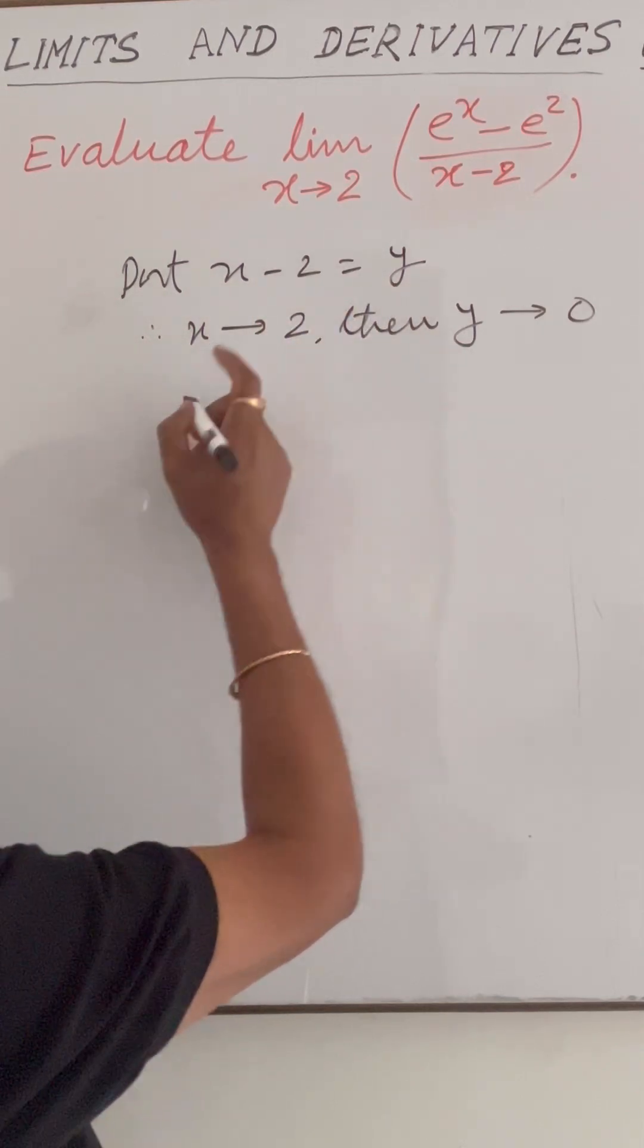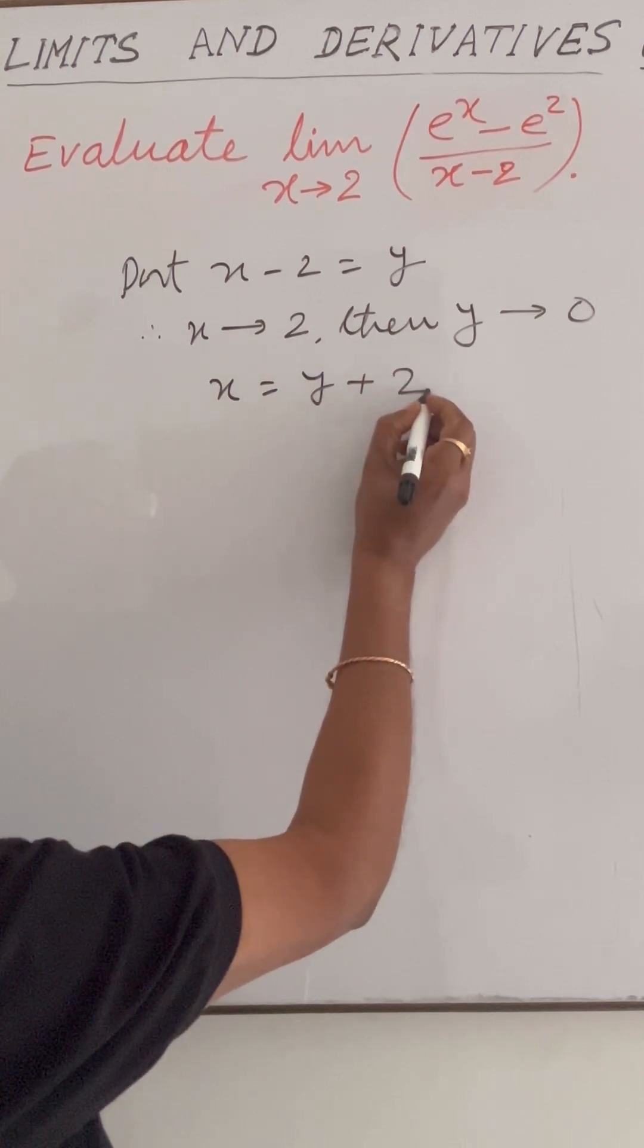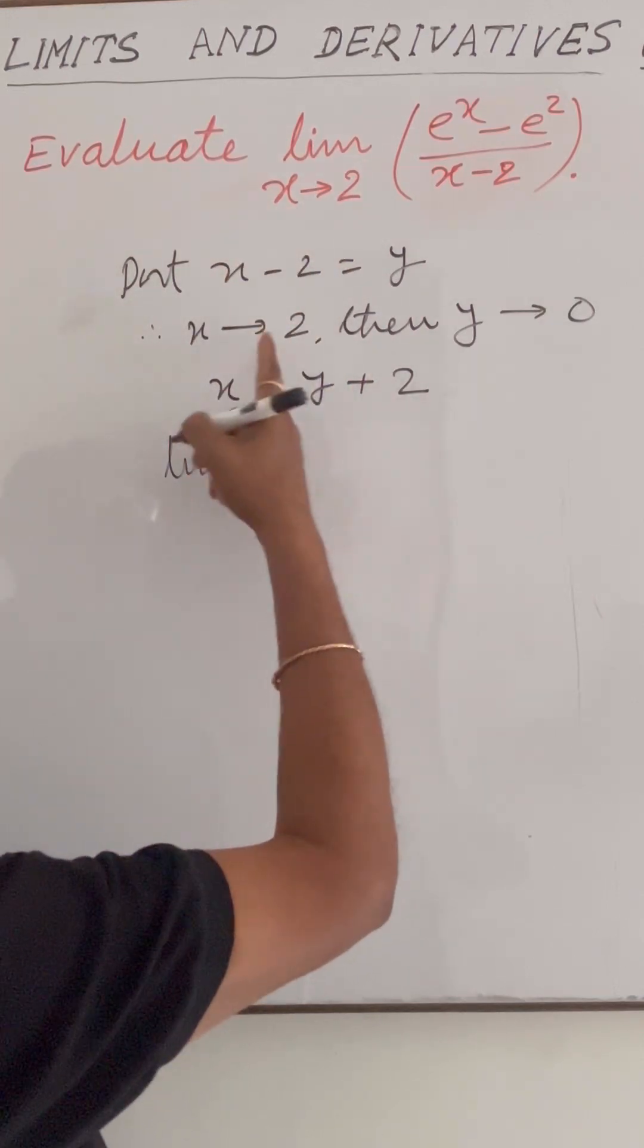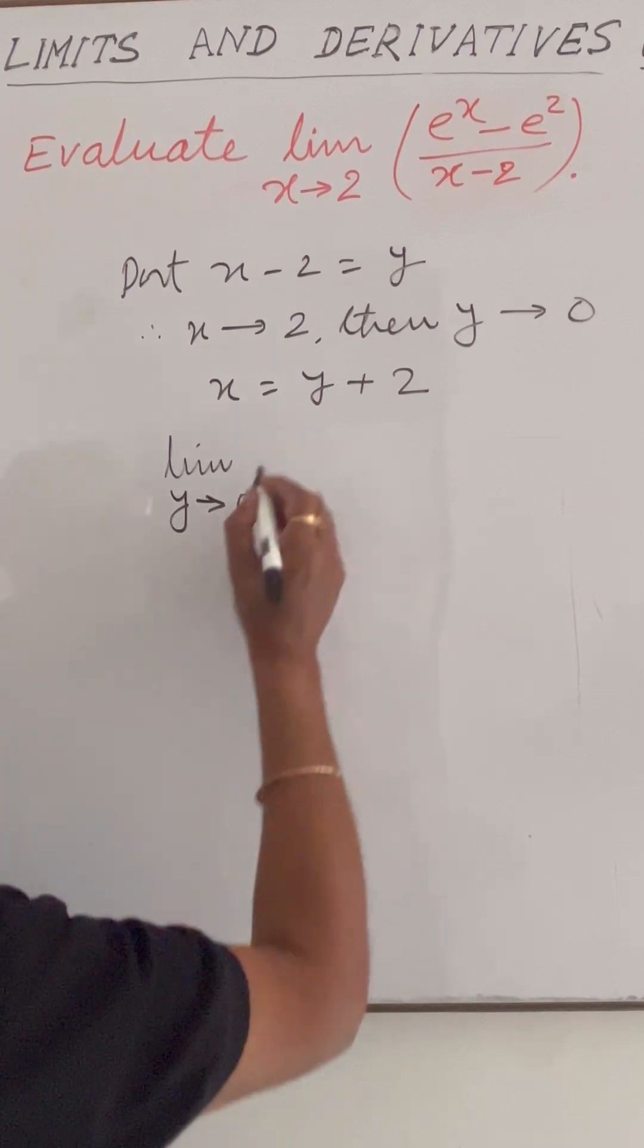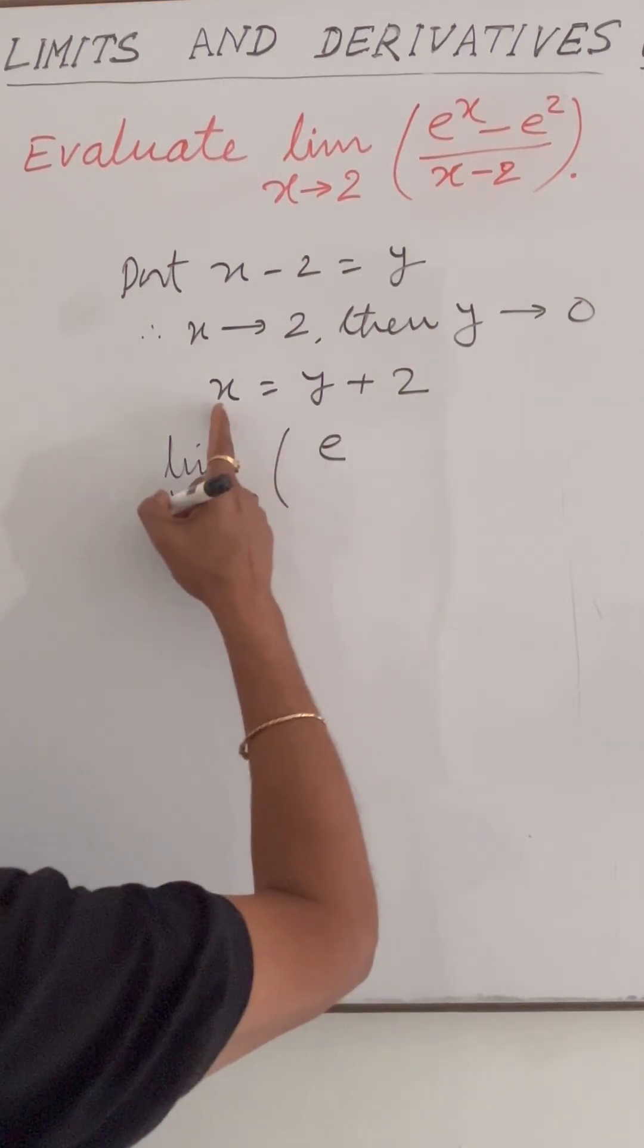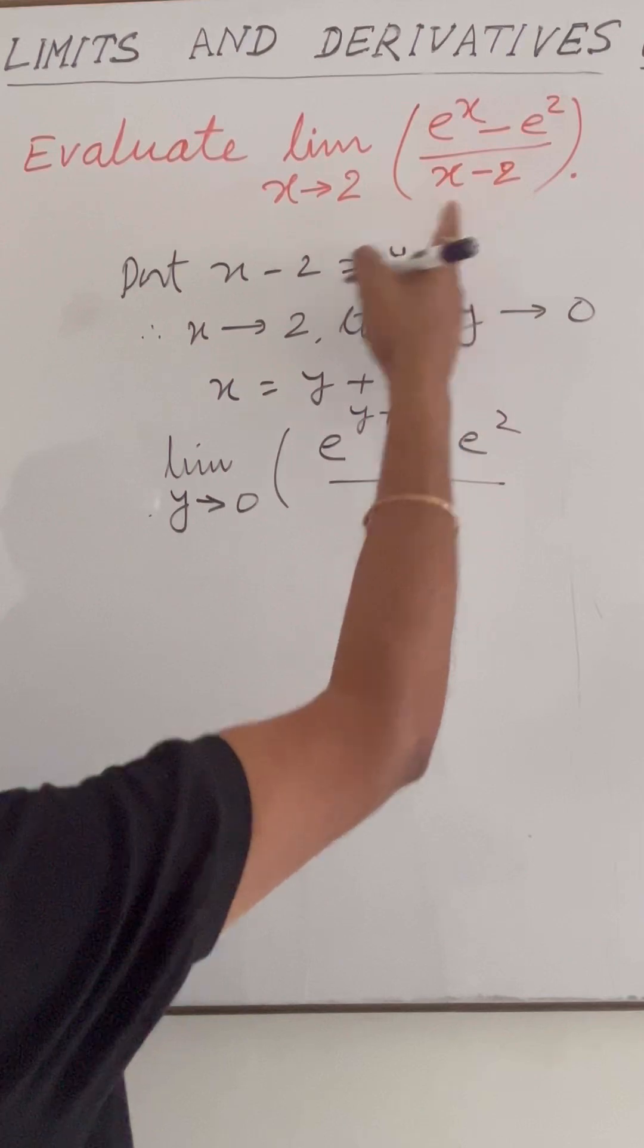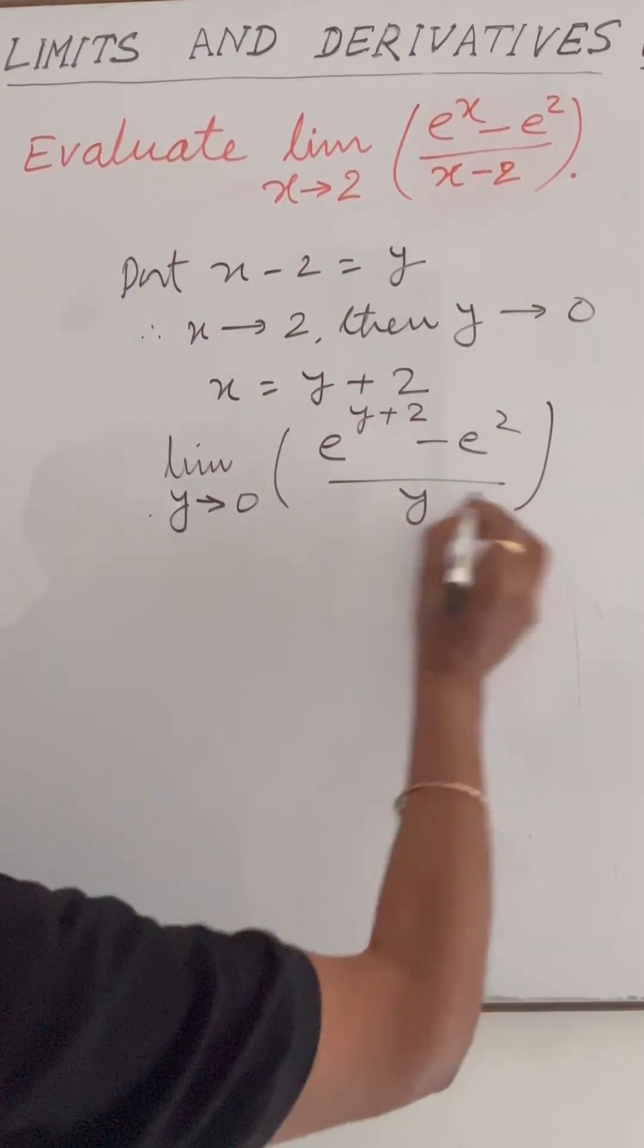From here we will get x is equal to y plus 2. So this function can be written as: limit y tends to 0. In place of x we can write y plus 2, so e to the power y plus 2 minus e squared upon x minus 2, which we are supposing is y.